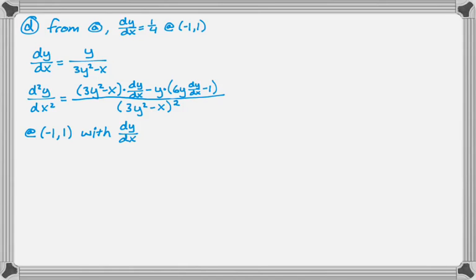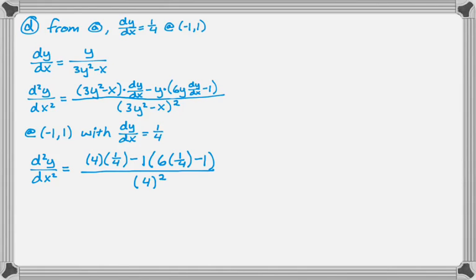So x is negative 1, y is 1, and I know that dy dx is 1 fourth from part A. So remember, you're going to use your answer from part A, kind of no matter how this shakes out. So let's plug in. So the second derivative is given by subbing in all these values. It's given by that.